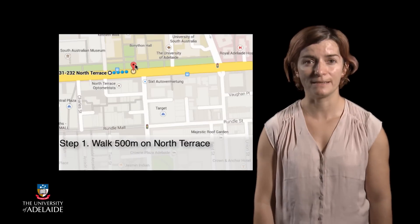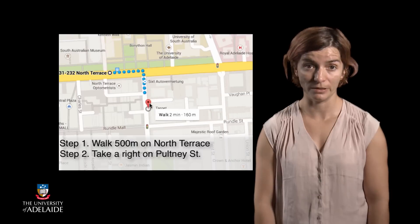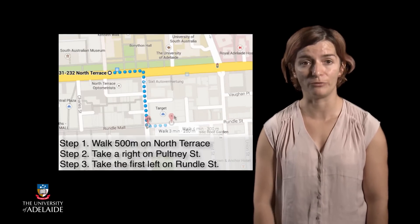For example, getting to my favorite coffee place involves walking for 500 meters on North Terrace, then turning right on Pultney Street, and then taking the first left on Rundle Street.